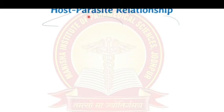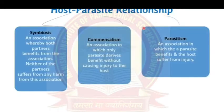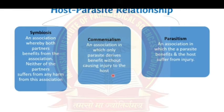In host-parasite relationships, there are three common types. First is symbiosis, in which both partners get benefit from each other and neither is harmed. Second is commensalism, in which the parasite gets benefit but without causing any injury to the host.